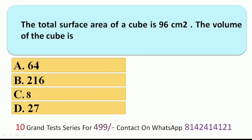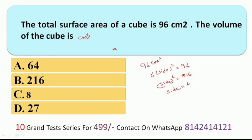Next question: the total surface area of a cube is 96 cm². We need to find the volume. The surface area of a cube is 6 × side² = 96, so side² = 16, therefore side = 4 cm. Volume = side³ = 4³ = 64 cm³. So the volume is 64 cm³.